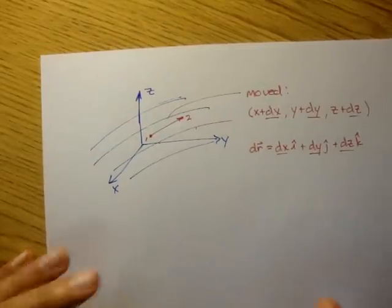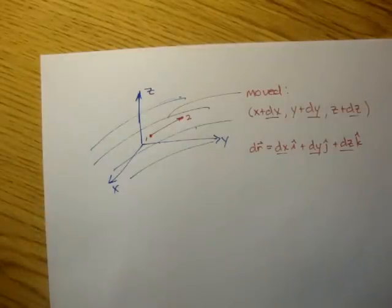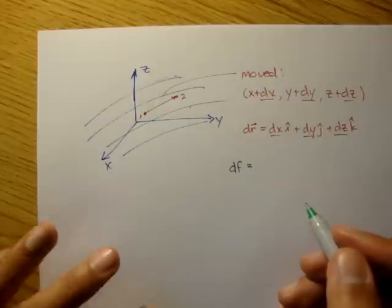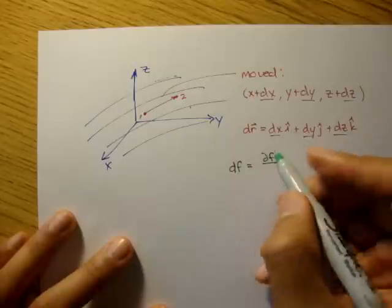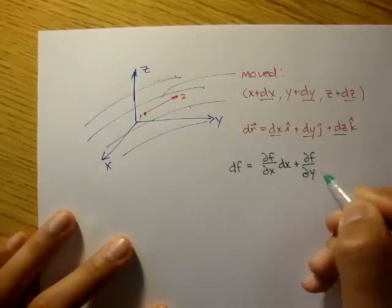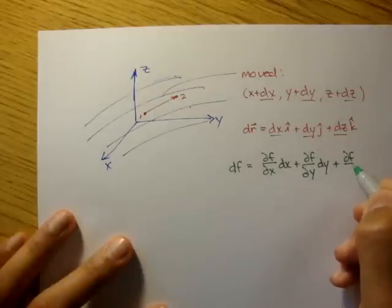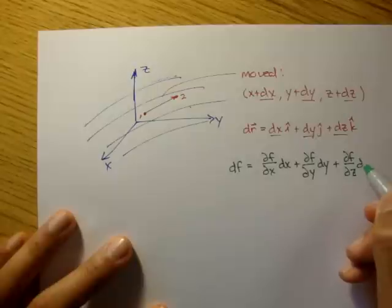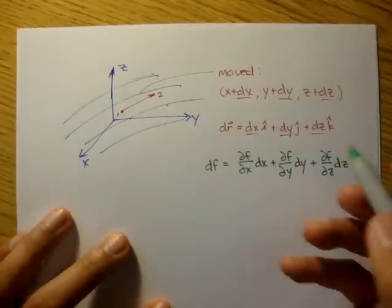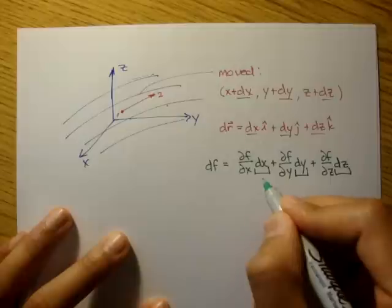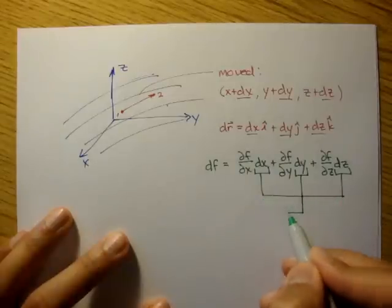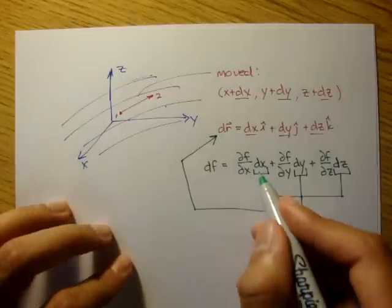This fluid we can define as a function — let's call that df. That is going to be equal to the partial of the function with respect to x times dx, plus the partial of the function with respect to y times dy, plus the partial of the function with respect to z times dz. These three components are actually the components of the differential position — the dx, dy, dz are the components of the differential displacement.